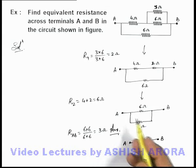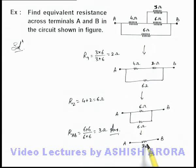So this is the way how we can reduce a given circuit to a single equivalent resistance by using series and parallel group combinations.